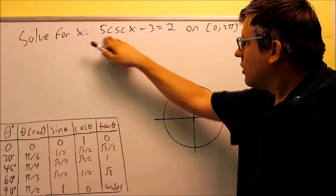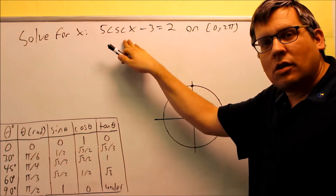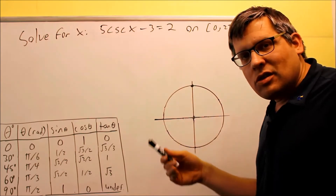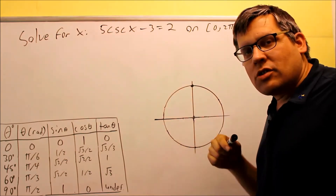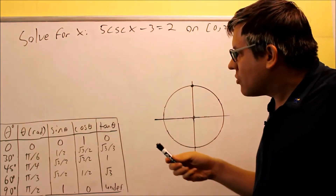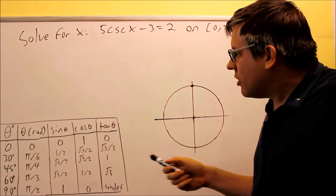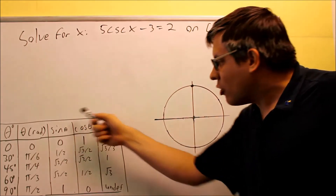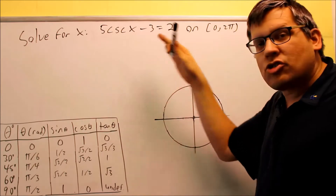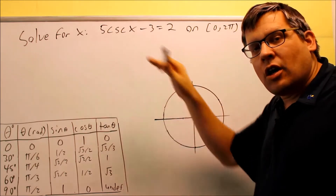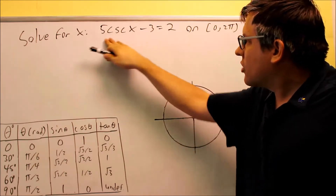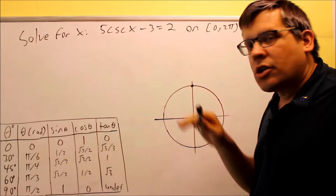For this problem we have a cosecant. Problems that involve cosecants or secants, we need to use the reciprocal identity to convert and change it over into either a sine or cosine, because that way we have those values off of our table. So eventually we're going to have to do that on this problem. But before we do that, let's first isolate cosecant.